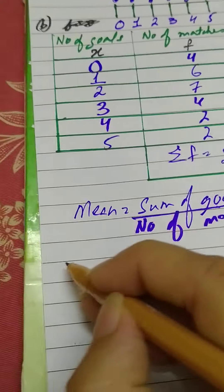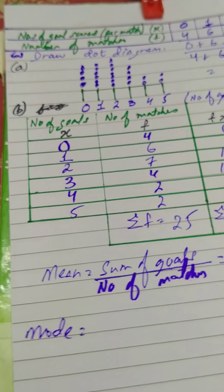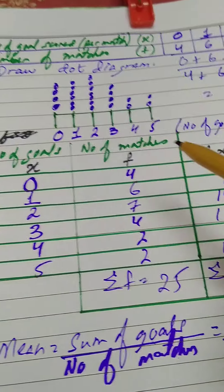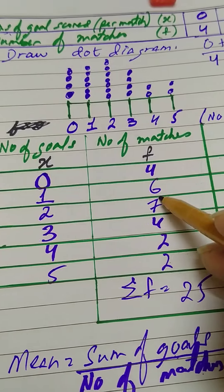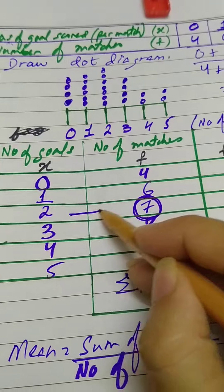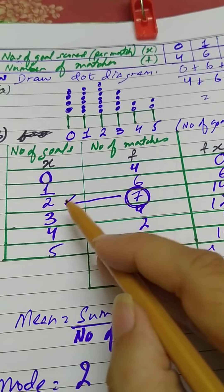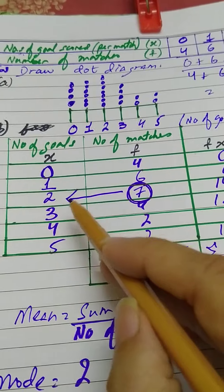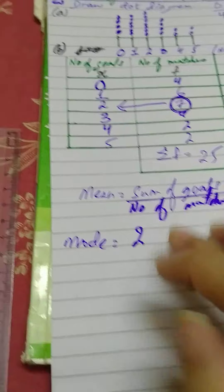Now for mode: the mode means the most repeated observation of the data. The observations here are number of goals. The maximum frequency tells us the maximum repetition. The maximum frequency is 7, corresponding to two goals. So the mode is 2 goals, because two goals is the most frequent, most repeated, most common value in the data.